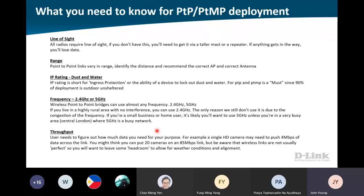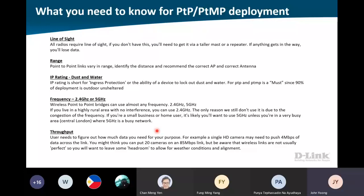I encountered an issue on one of the projects. During the site survey, I saw everything was okay, so we put an AP there. But after a few years, the tree grew taller and just covered the AP. So the customer called and complained - why is my signal so weak? Keep on having disconnections, unable to see all the CCTV across another site. So make sure when you do the site survey for the line of sight, it's very, very important.